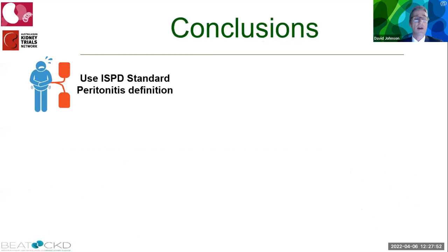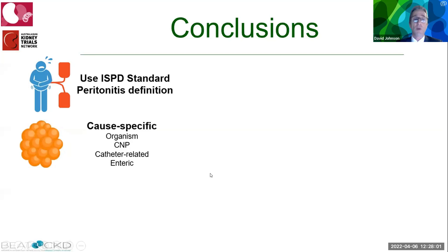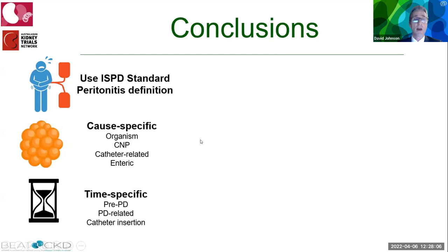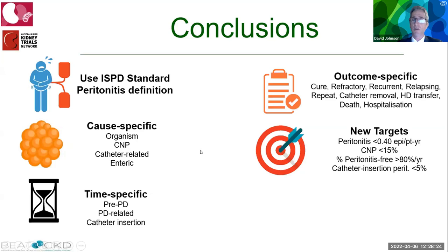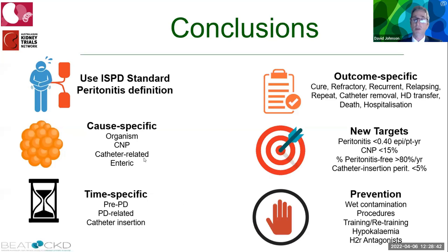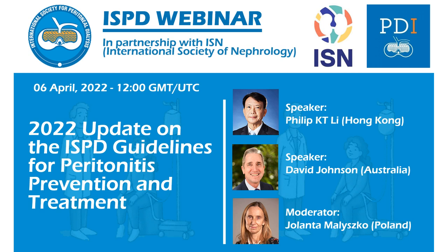In conclusion for the first half: the ISPD guidelines strongly recommend use of standardized peritonitis definitions; four cause-specific categories; three time-specific categories (pre-PD, PD-related, catheter-insertion-related); and multiple outcome-specific definitions. New targets include peritonitis rate <0.4 episodes per patient-year, culture-negative peritonitis <15%, peritonitis-free rate >80% per year, and catheter-insertion-related peritonitis <5%. Prevention recommendations address wet contamination, invasive procedures, training/retraining, hyperkalemia treatment, and H2 receptor antagonist avoidance.